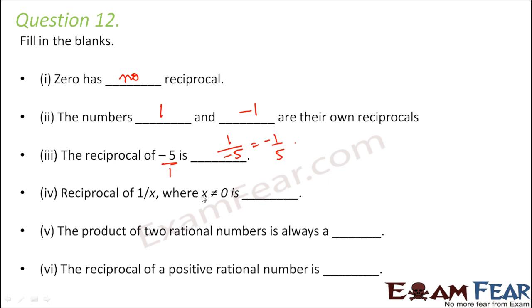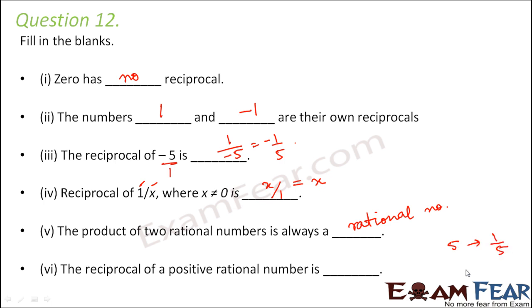The reciprocal of 1/x (where x ≠ 0) is x/1, which is simply x. The product of two rational numbers is always a rational number because the closure property holds true for multiplication of rational numbers. The reciprocal of a positive rational number is always positive — for example, reciprocal of 5 is 1/5, and reciprocal of 19/20 is 20/19. Reversing numerator and denominator does not affect the sign.